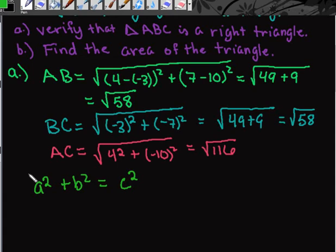We're going to use the Pythagorean theorem where my two smaller sides are a and b, so that would be the square root of 58 and the square root of 58. And my c² would be the hypotenuse or the larger side.